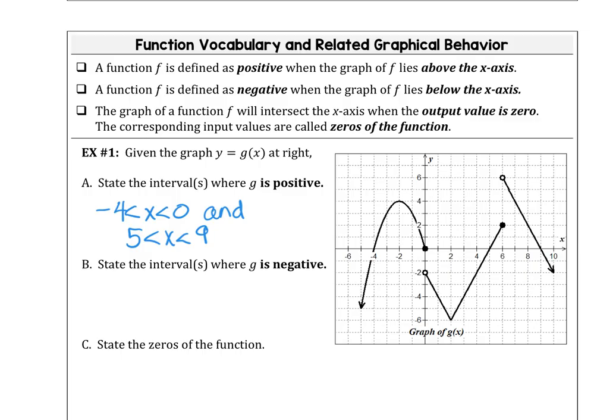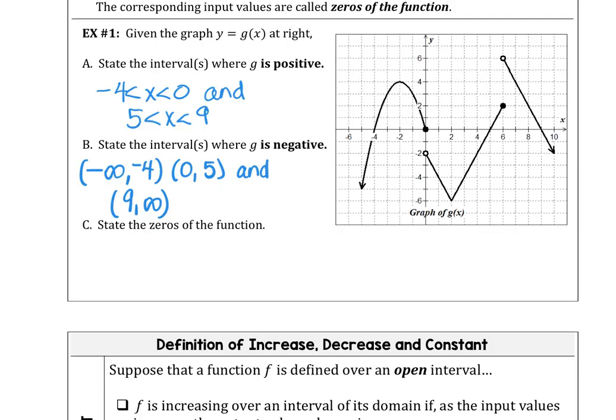In part B we're looking for where the interval of the function g is negative, and our definition says a function is defined as negative when the graph of f lies below the x-axis. Give that a try on your own now. How did you do? Negative infinity to -4, 0 to 5, and 9 to infinity.